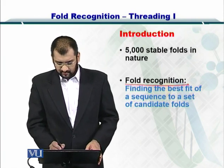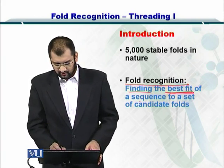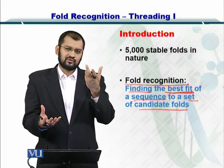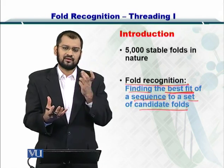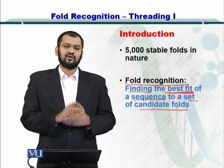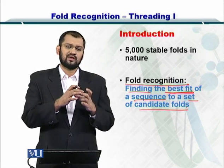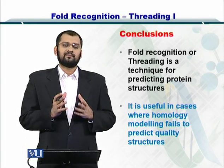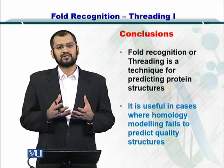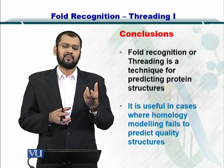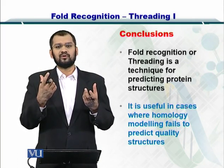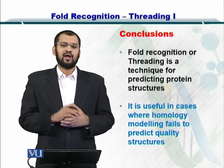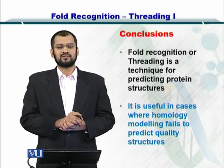Fold recognition then becomes a problem in which we find the best fit of a sequence to a set of candidate folds. You have several folds in a database and a query sequence, and you try to find how that sequence matches the folds in the best way. The fold that matches the sequence best is selected. In conclusion, fold prediction or threading is a protein structure prediction strategy in which we compare a sequence with the sequences of different folds. If the sequences are homologous, we check if the sequence can also form that fold, and by combining those folds we can arrive at the tertiary structure of the protein.